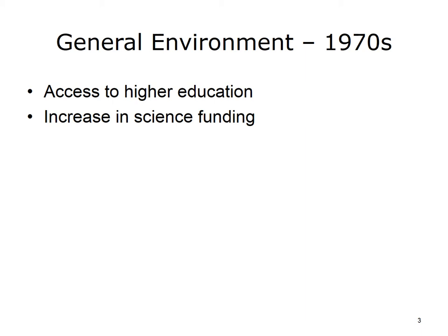During the 1970s, we saw not only increased access to higher education, but also increases in science and education funding. This was related to the perceived need to improve our science education in order to compete with the Russian space program. At this time, the emphasis was also on science applied to education — not only did we need to improve science education, but we were going to make the entire process of education more systematic and scientific.